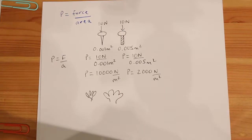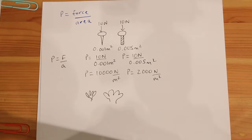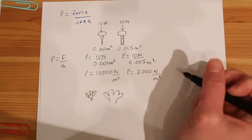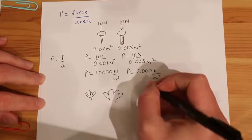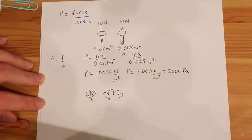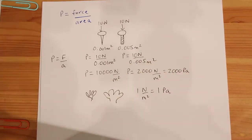So we've defined what pressure is, we know the formula, and we've looked at some examples. Something very important to note is that we used the SI unit for force, which is newtons, and the SI unit for area, which is meters squared. The resulting unit — newtons per square meter — is known as the Pascal. So instead of saying 2,000 newtons per square meter, we can say 2,000 pascals. Therefore, 1 newton per square meter equals 1 pascal, and that is the SI unit for pressure. If we have 1,000 pascals, we call it 1 kilopascal, using the same prefixes for powers of 10.